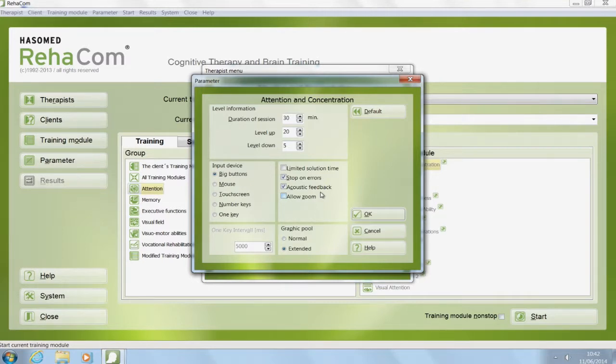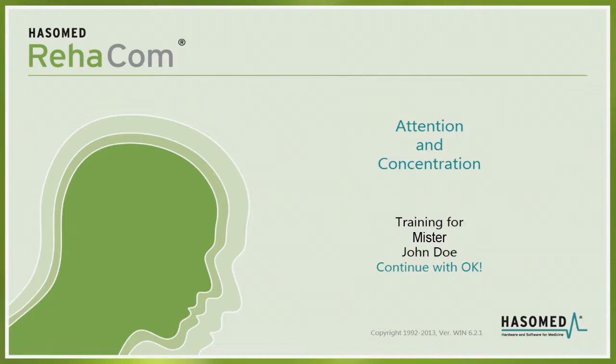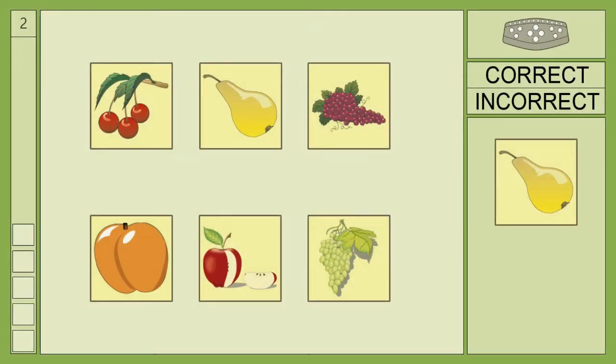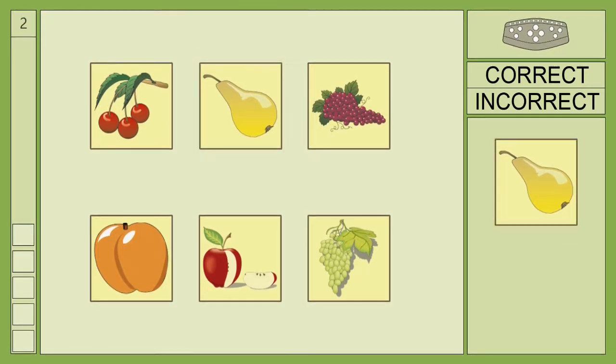It is possible to change these parameters at any time during training. In this module, the task is to find the correct object in a set of presented objects in a matrix. The reference object is shown at the side of the screen, and only one object in the matrix is identical to it.